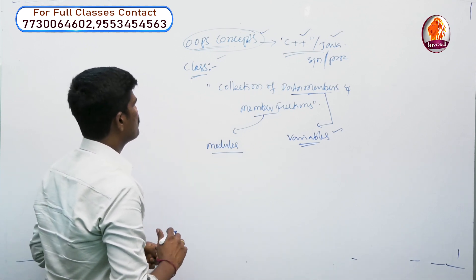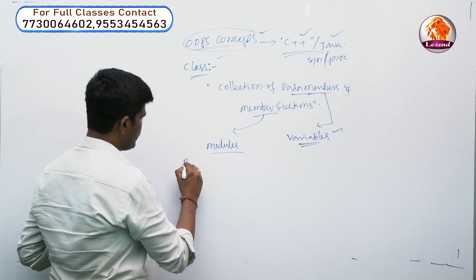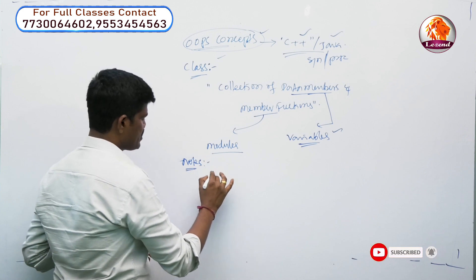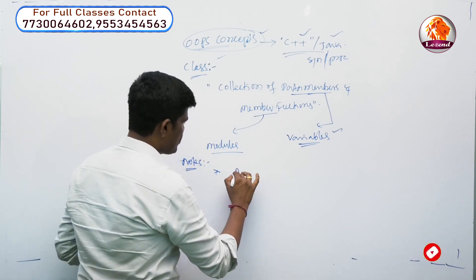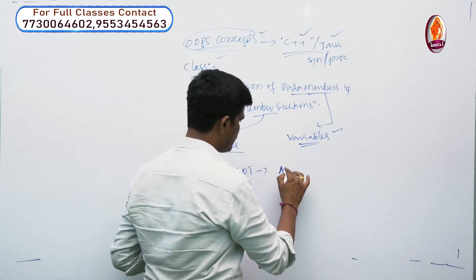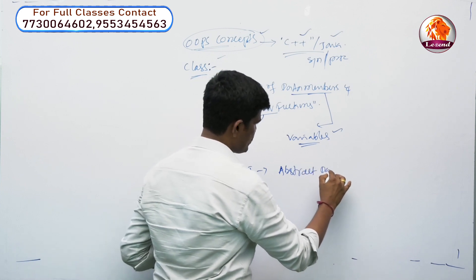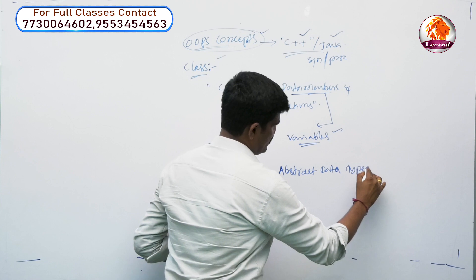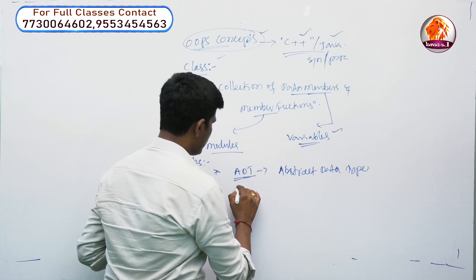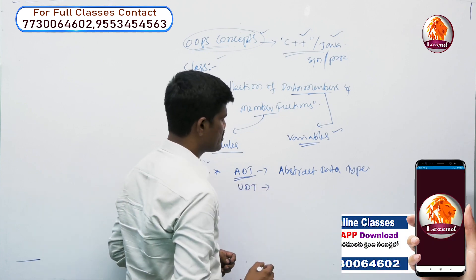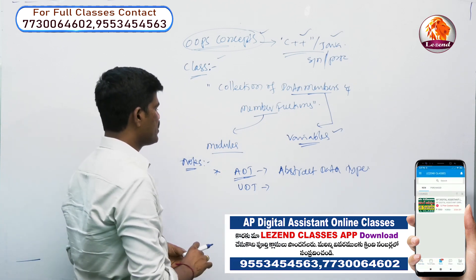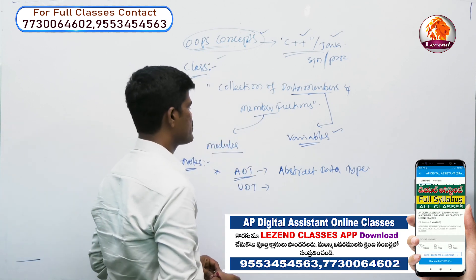We have discussed the criteria in general. In the class, there are some key points. Class is sometimes called ADT — Abstract Data Type. The class is considered as an ADT. It is also classified as a user-defined data type.